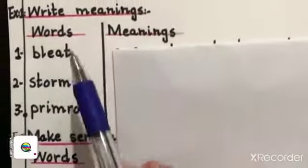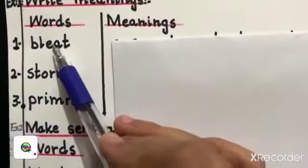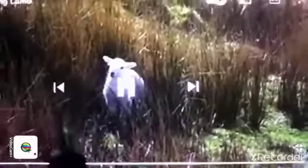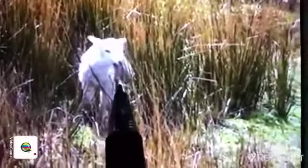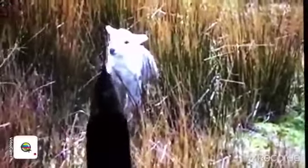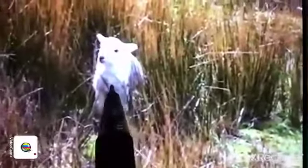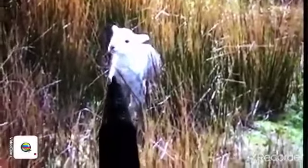Then words meaning. W and M must be capital. Your first word is BLEAT. Do you know the meaning of BLEAT? Look here in this picture. This is a lamb and the sound made by lamb or sheep. It's called BLEATING. This sound is called BLEAT.